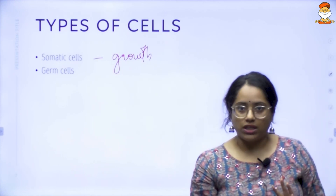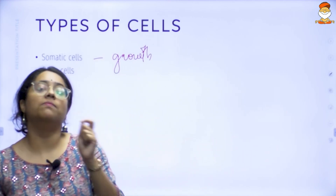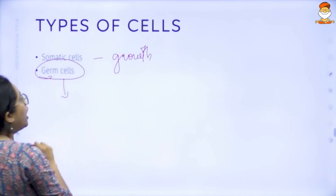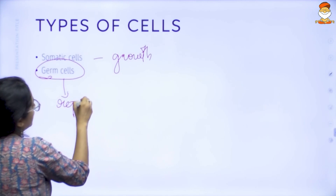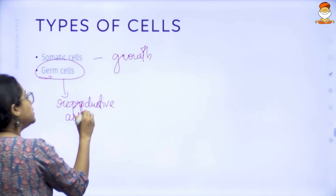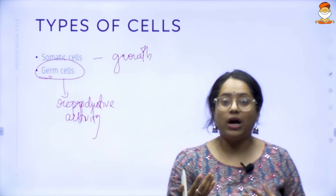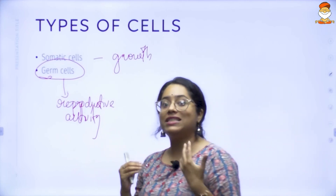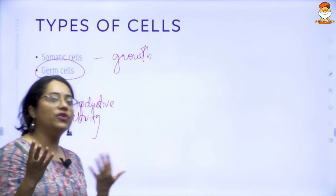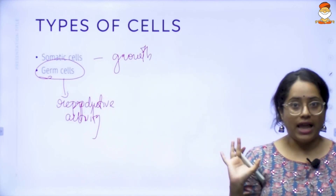Apart from growth cells or somatic cells, you have certain other cells in your body called germ cells. The germ cells are the ones which are going to help in your reproductive activity. The germ cells differ in different sexes — for example, in a male you have germ cells which are sperms, and in a female you have the germ cell which is an egg. Somatic cells are common for everyone.